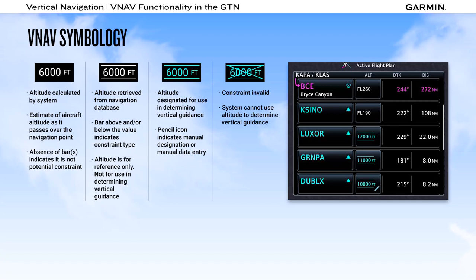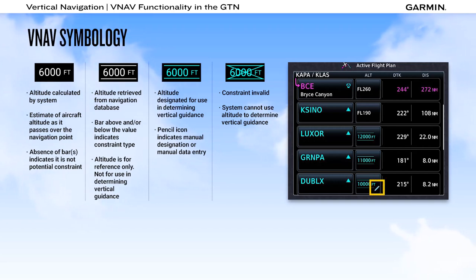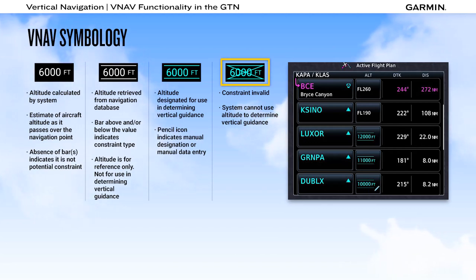An altitude displayed in cyan is an altitude used in determining vertical guidance. If a pencil appears next to the altitude, that indicates that the altitude was manually entered. An invalid constraint, which cannot be used by the system, will appear with an X over the altitude.